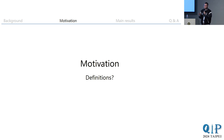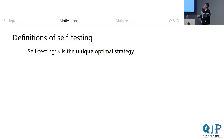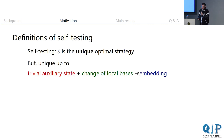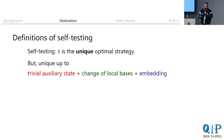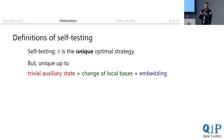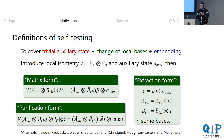Another issue we found is the variance in definitions of self-testing. We want S to be the unique optimal strategy, but there are several trivially equivalent actions that don't change the game value: giving Alice and Bob more entangled state they never measure, changing local bases, or embedding the strategy into a larger Hilbert space. These form an equivalence relation between strategies that we want to quotient out when discussing uniqueness.